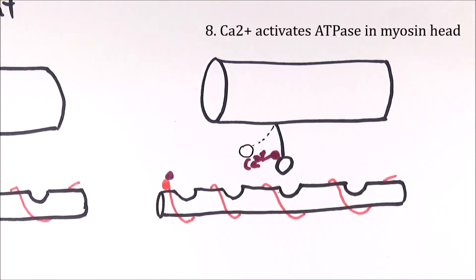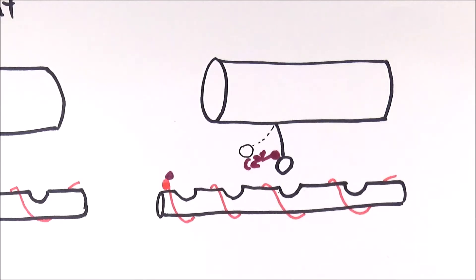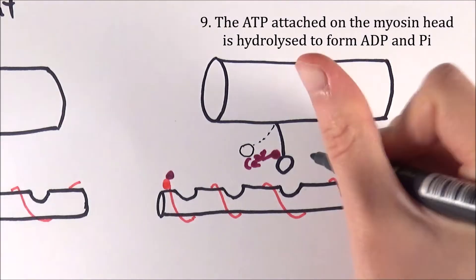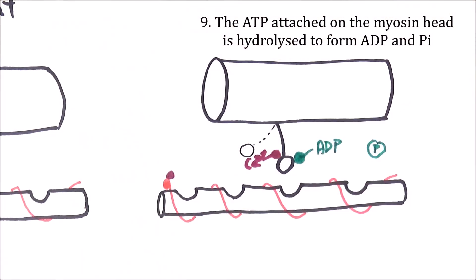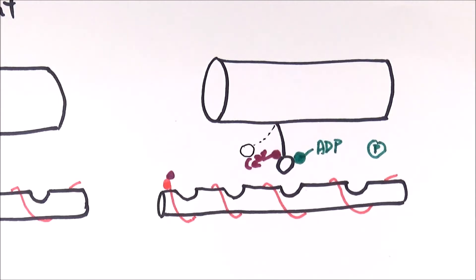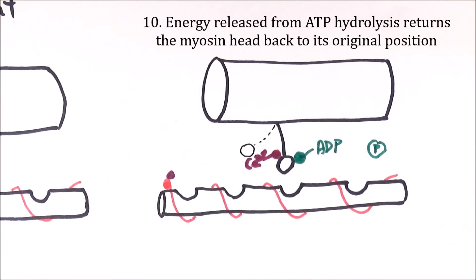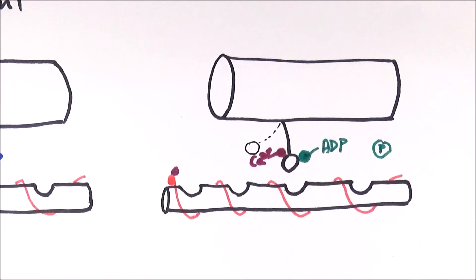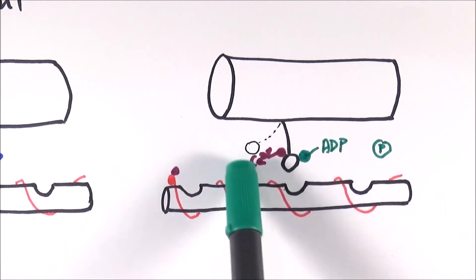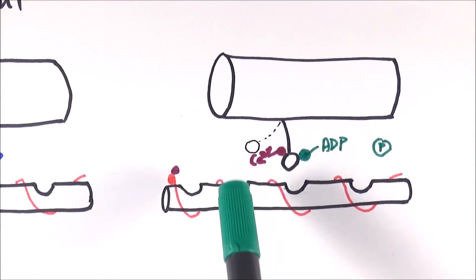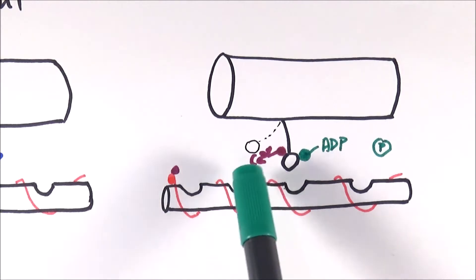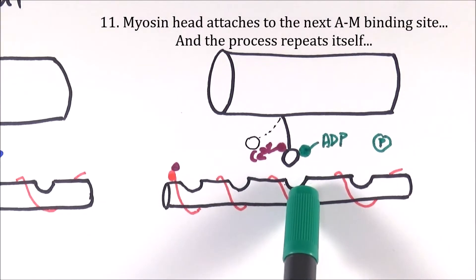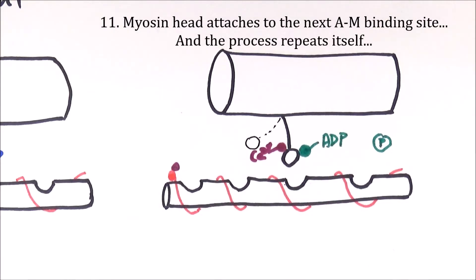This activates the ATPase component on the myosin head, which will hydrolyse the ATP back into ADP and an inorganic phosphate group, which is then released. That will give the energy for the myosin head to return back to its original position. This is a very important concept that people often mix up — people often think that flexing of the myosin head requires energy, but actually the energy from ATP is used in returning the myosin head back to its original position, not to flex it. After it returns, it will then bind to the next actin-myosin binding site and the whole process repeats itself again.